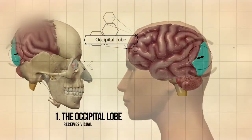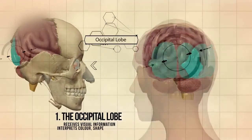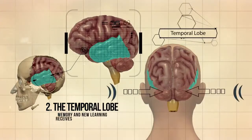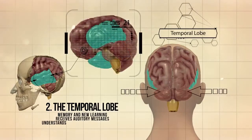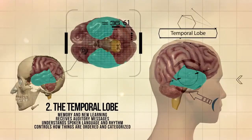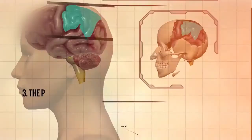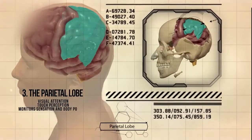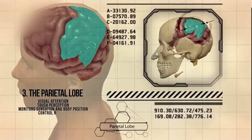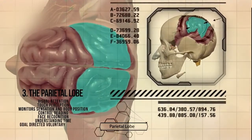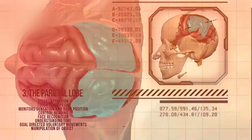The occipital lobe receives visual information and interprets color, shape, and distance. The temporal lobe is responsible for memory and new learning, receives auditory messages, understands spoken language and rhythm, and controls how things are ordered and categorized, as well as some visual perception. The parietal lobe is responsible for visual attention, touch perception, monitoring sensation and body position, controlling reading, face recognition, understanding time, goal direction, voluntary movements, and manipulation of objects.